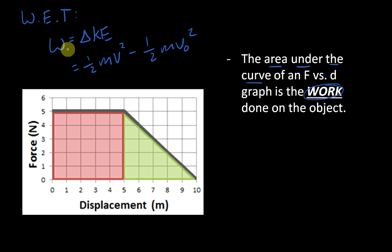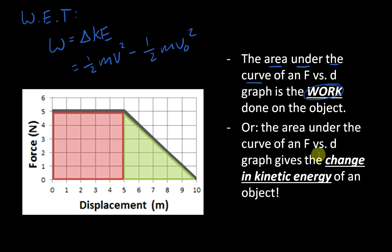Well, since the area under the curve is work, and work is the change in kinetic energy of the object, this is true. The area under the curve of a force versus distance graph, or displacement graph, gives you the change in kinetic energy of an object. It is also giving you this value here, just because work is that value.